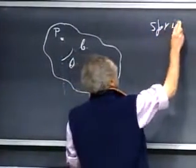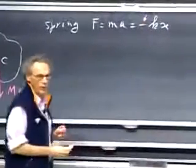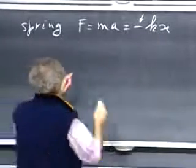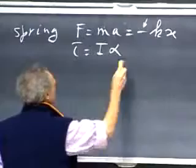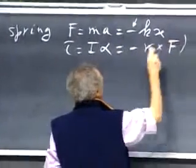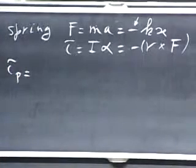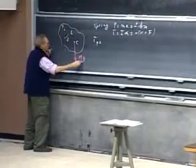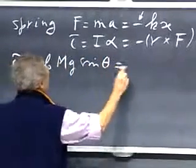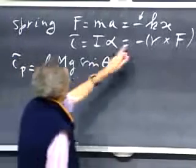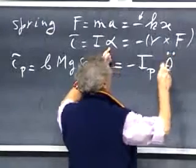Remember when we had a spring, just a one-dimensional case, we had F equals ma, and that for the spring became minus kx, and the minus sign indicates that it's a restoring force. So we now get something very similar. In rotation, F becomes torque, mass becomes moment of inertia, and acceleration becomes angular acceleration, so now we have minus r cross F. The minus sign indicates that it is restoring. So if I take the torque relative to point P, then I have this position vector which has magnitude b, the force is mg, and I have to multiply by the sine of theta. So I have b times mg times the sine of theta, and that equals minus the moment of inertia about point P times alpha, and alpha is the angular acceleration, which is theta double dot.